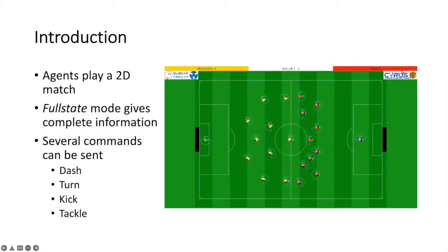In Soccer 2D, agents play the game in a 2D simulated environment. They receive an incomplete view of the world, filled with discretized information that is stochastically served to the player. However, there is also a special mode called Full State, where the player receives complete information.